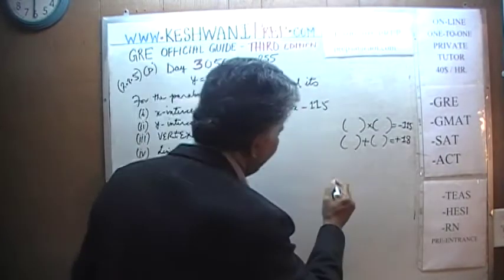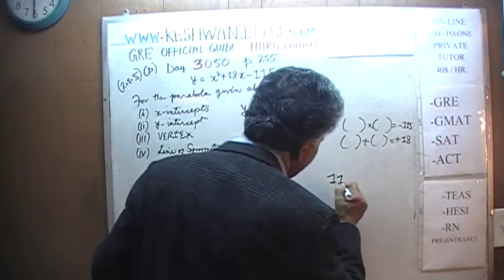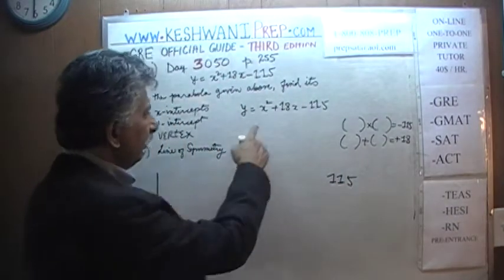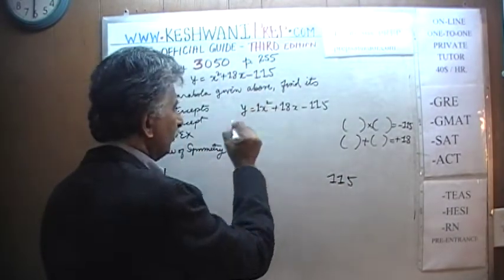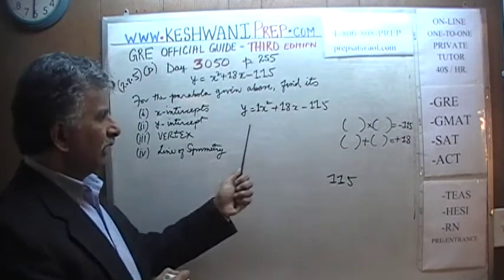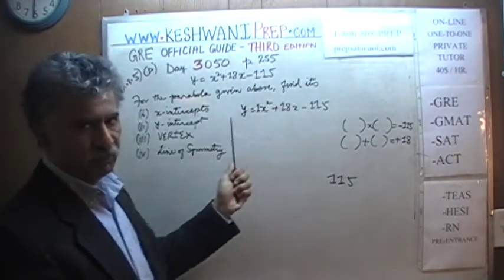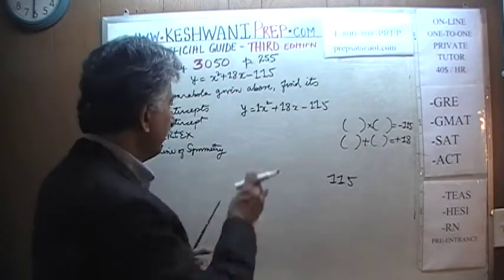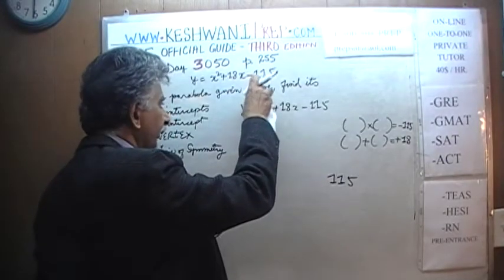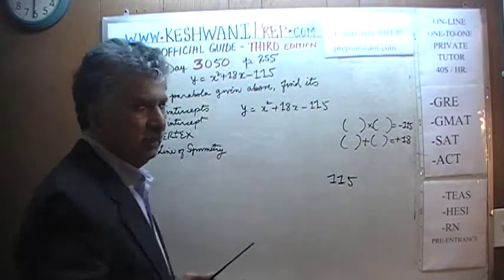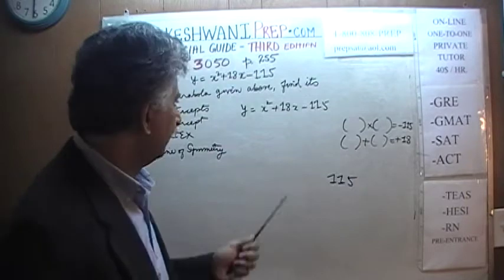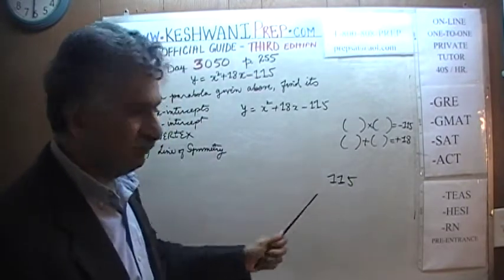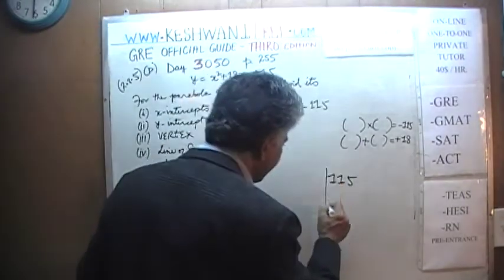Let's factorize 115 and find its factors. Here the coefficient of x² is 1, which makes our life much easier — otherwise we'd have a more complicated scenario, which you won't deal with often on the GRE unless it's a hard problem. This is a medium problem. Let's find the factors of 115. We can't divide by two because it's an odd number. Let's try dividing by three.